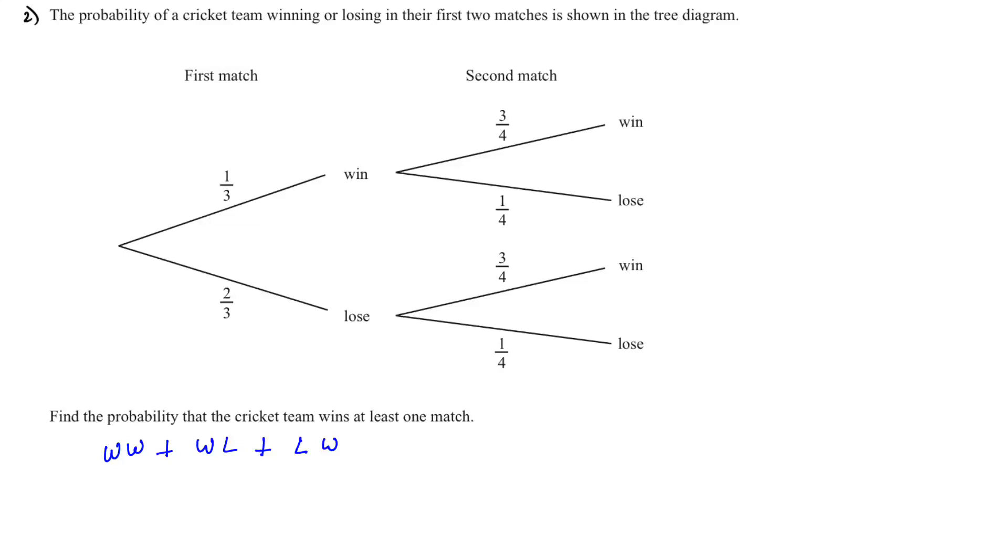But there's an easier way to do it. You know that all the probabilities when we add them equal to 1, so I can do 1 minus the probability of lose-lose. That will give me the rest of the probabilities. 1 minus 2 over 3 multiplied by 1 over 4, which gives us 5 over 6.